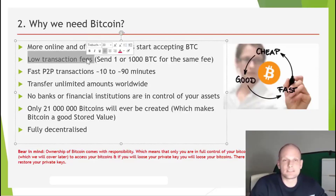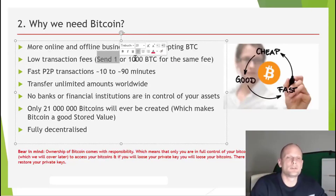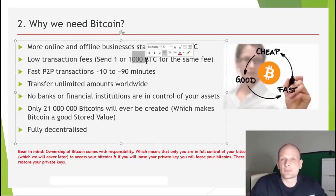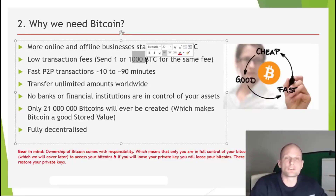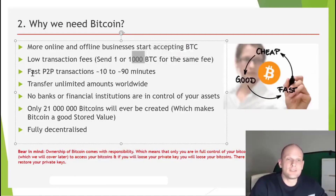Another huge benefit of Bitcoin and cryptocurrencies in general is low transaction fees. It doesn't matter whether you send 1 Bitcoin or 1 million Bitcoin — you will still pay the same low transaction fee. This is because in blockchain technology you are paying for bytes, not for the amount you are sending, which is why transaction fees are very low.